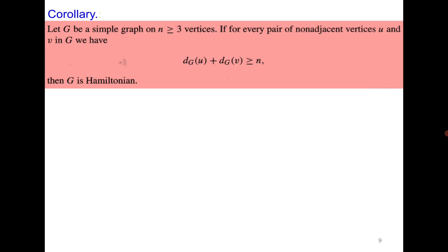Next is the corollary based on the result we just discussed. If G is a simple graph and for every pair of non-adjacent vertices u and v, degree(u) + degree(v) ≥ n, then G is Hamiltonian. If for every pair of non-adjacent vertices the degree sum is ≥ n, then in the closure you make them all adjacent, meaning the closure of G has all vertices adjacent to each other, so the closure is the complete graph. Since complete graph is Hamiltonian, G is Hamiltonian from the previous result.